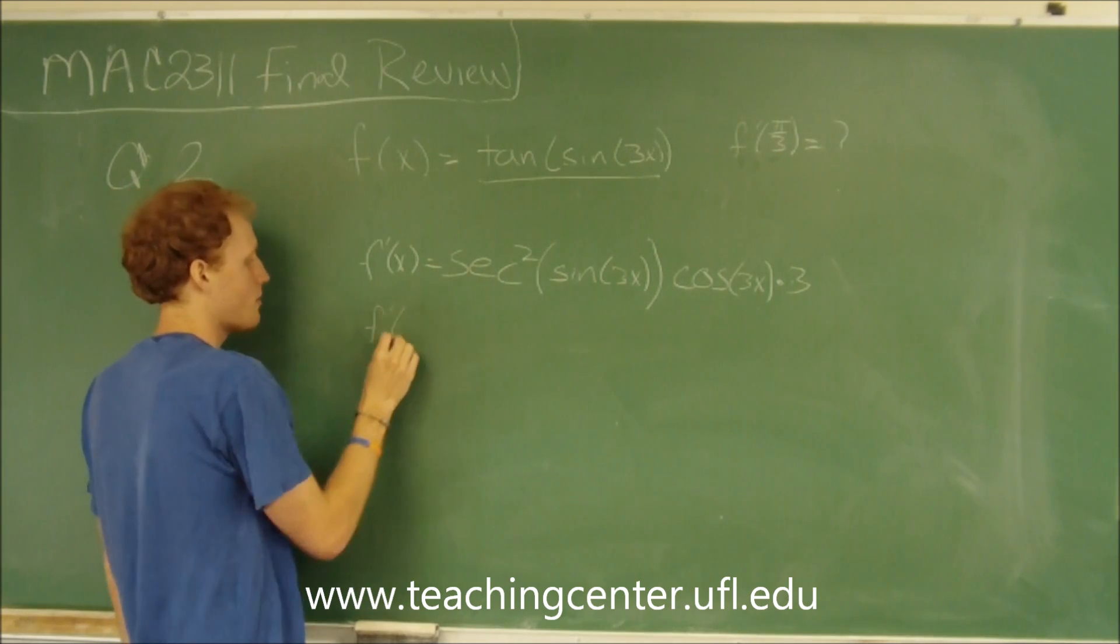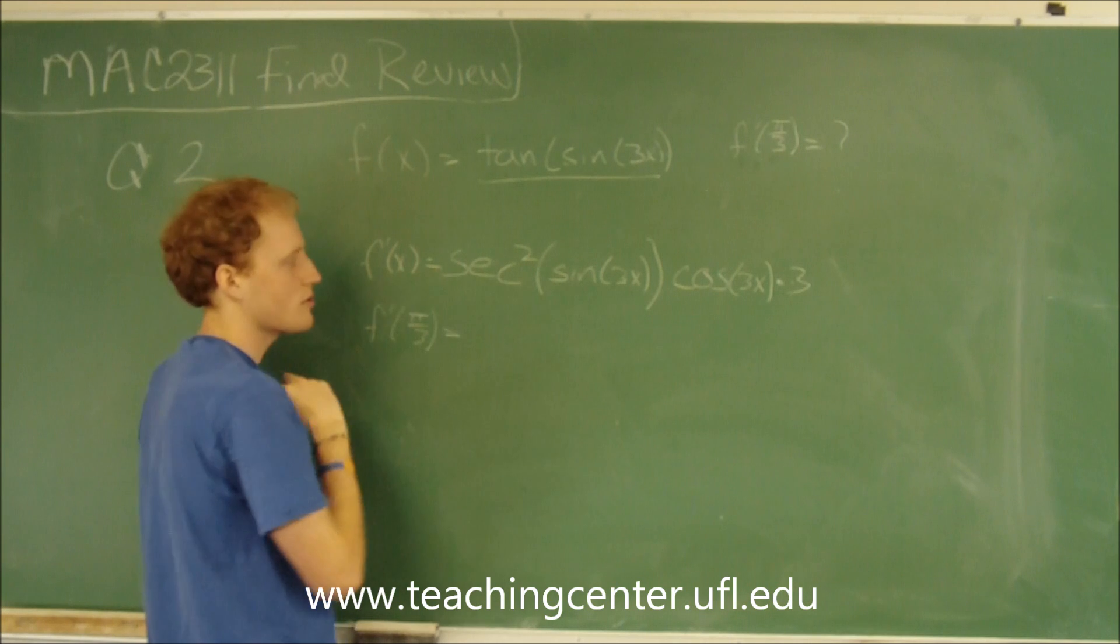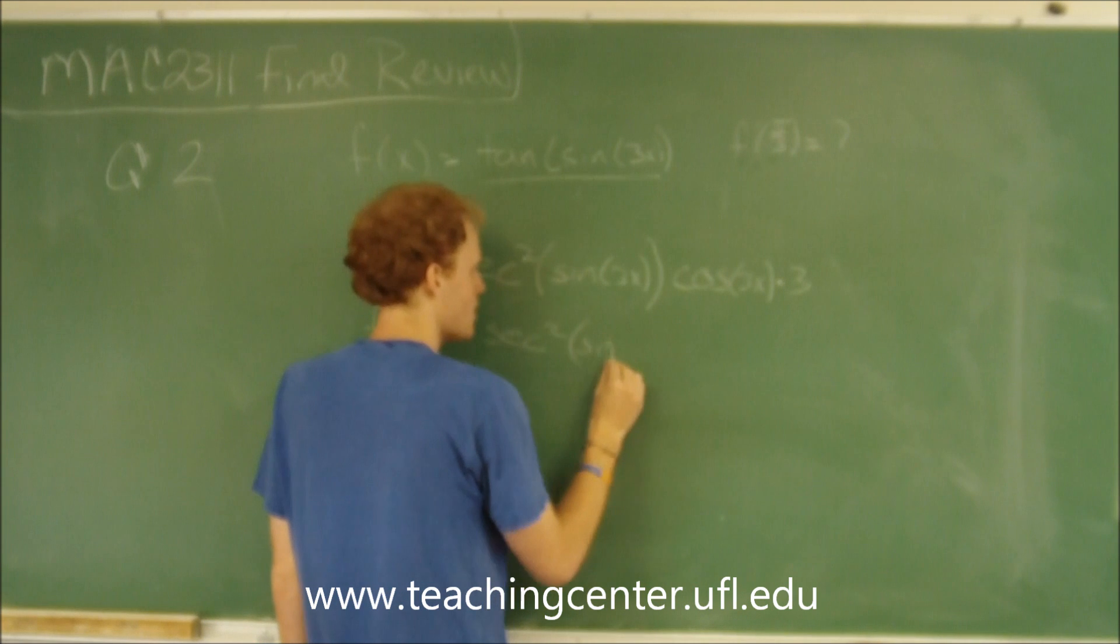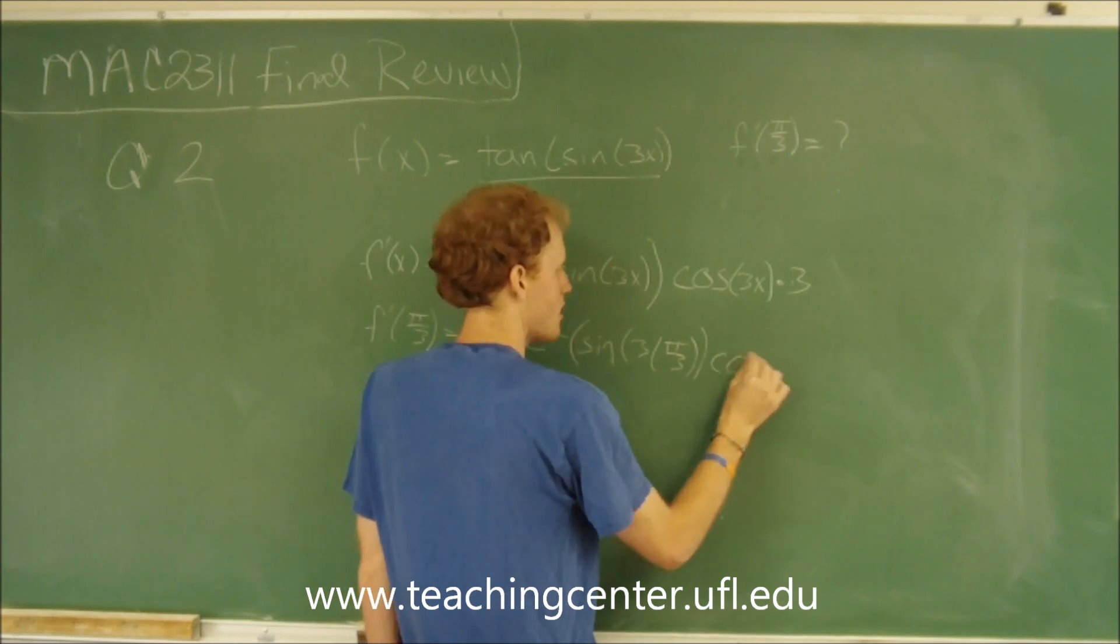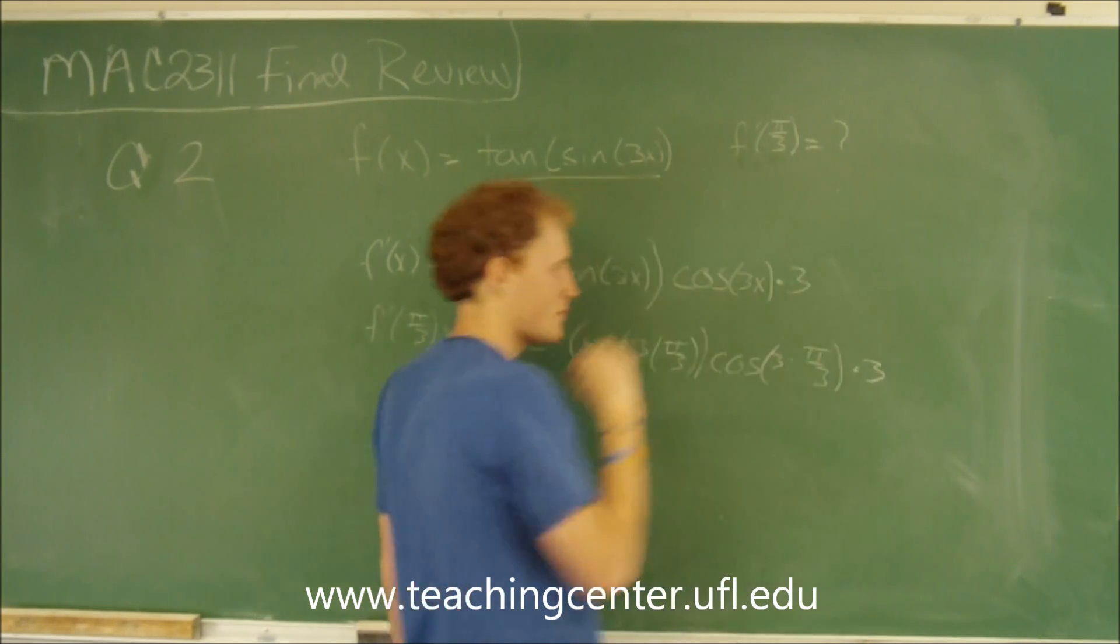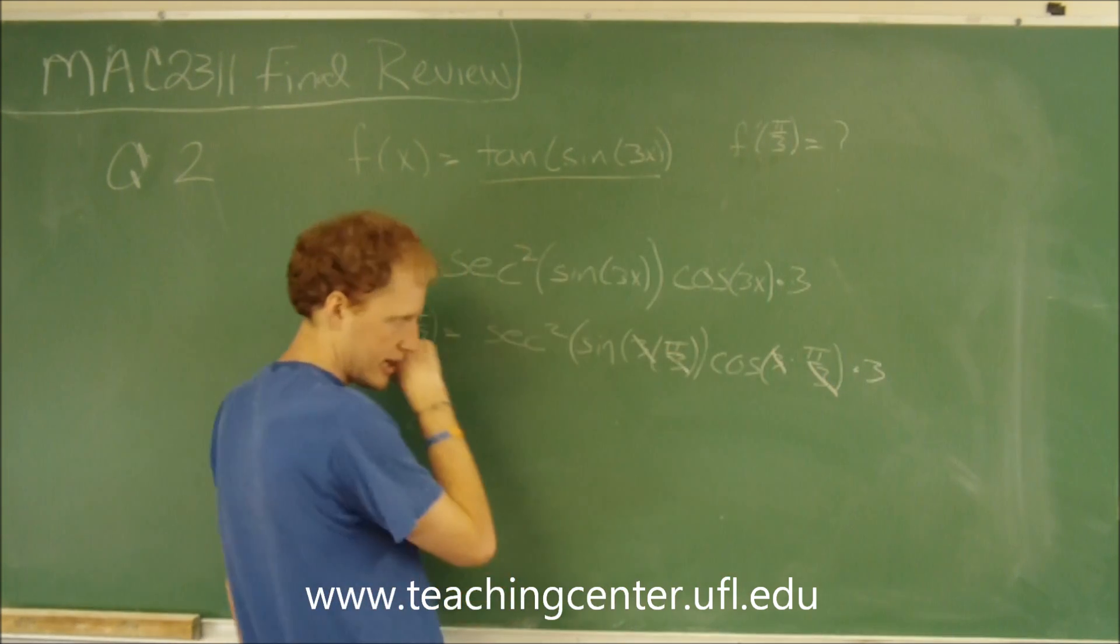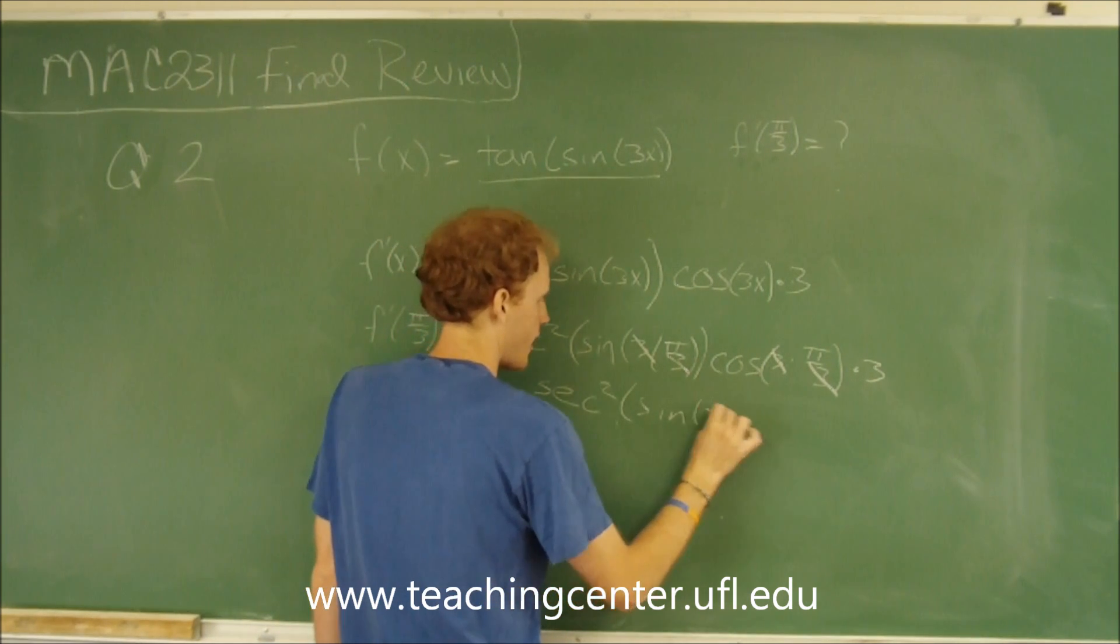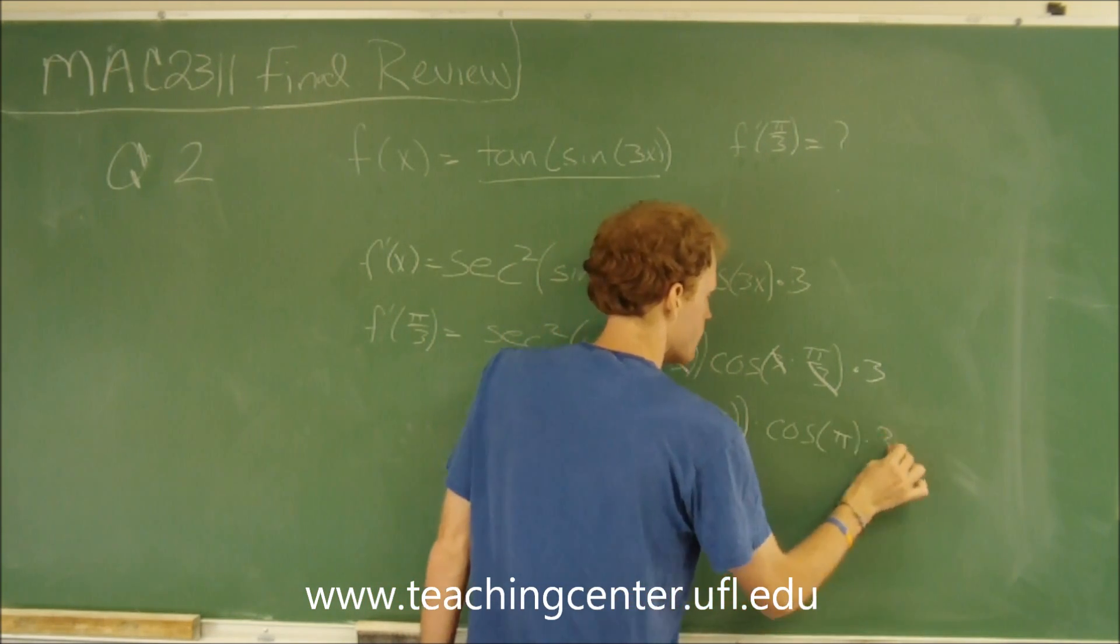So now, to find f prime, the derivative at pi over 3, we just plug pi over 3 into our equation. So it would be the secant squared of the sine of 3 times pi over 3, times the cosine of 3 times pi over 3 times 3. So the 3s in here cancel, so it's the secant squared of the sine of pi times the cosine of pi times 3.